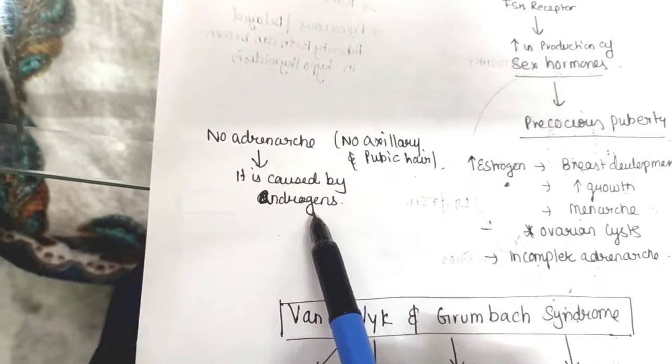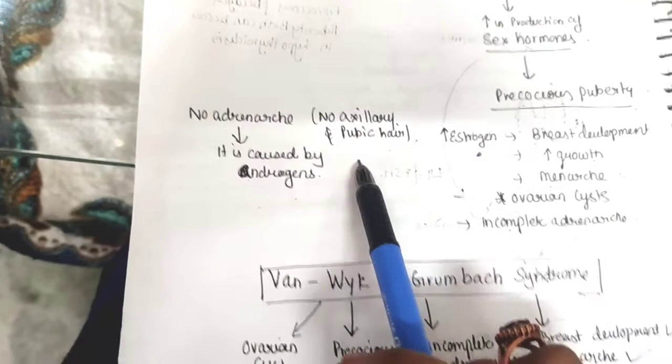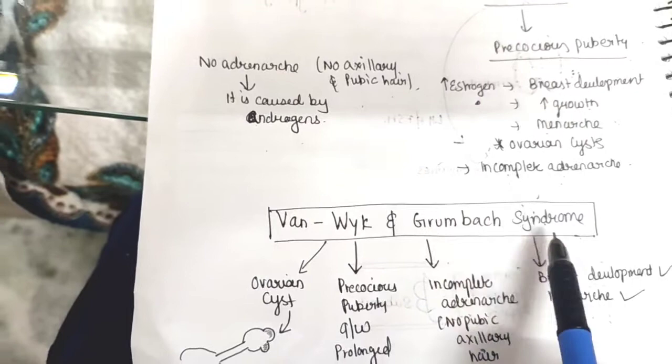We know the secondary sexual character that is axillary and pubic hair is caused by effect of adrenals. Adrenal cortex, if you remember, secrete androgens that cause increase in axillary and pubic hair.